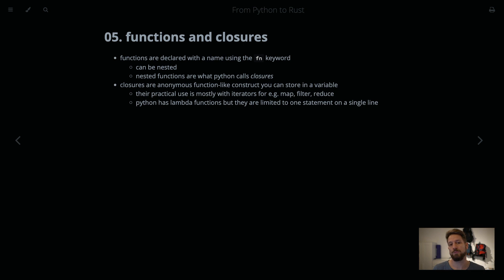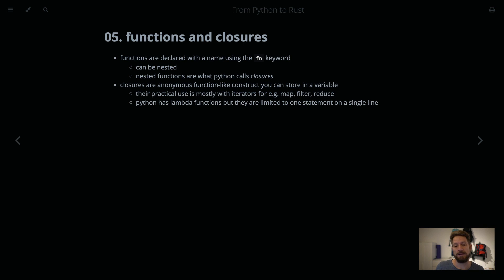Practical uses where you'd use closures in both languages include map, filter, and reduce operations, where it is often superfluous to define a full named function. It's often simple operations you want to quickly define inline, and it would actually be harder to read if the function were defined elsewhere. But there are lots of other applications where you might want to use closures.